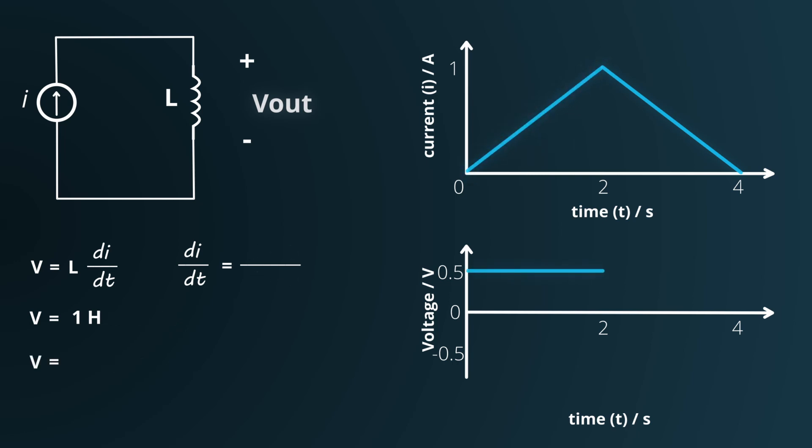Continuing on, from T equals 2 seconds to T equals 4 seconds, the current decreases linearly from 1 amp to 0 amp over a 2 second span again. This implies a rate of change of current, di/dt, of 0 minus 1 amp over 2 seconds equals minus 0.5 amps per second.